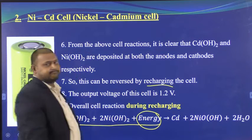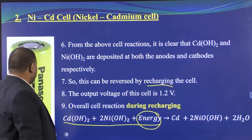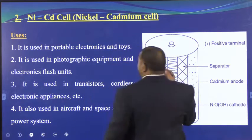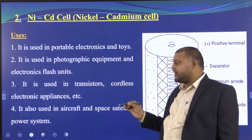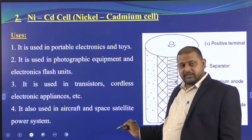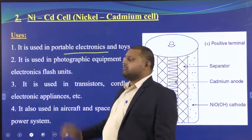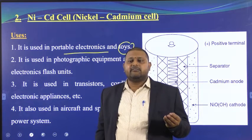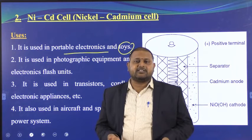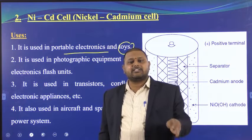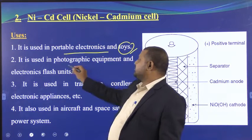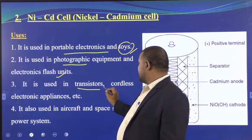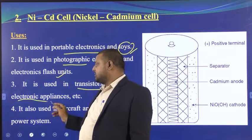Now we can see the diagram again. The important uses of the nickel cadmium battery: it is rechargeable. They are used in portable electronics — for example, toys (if a toy discharges you can recharge it). They are also used in photographic equipment and flashlights, transistor radios, and cordless electronic appliances such as cordless phones.